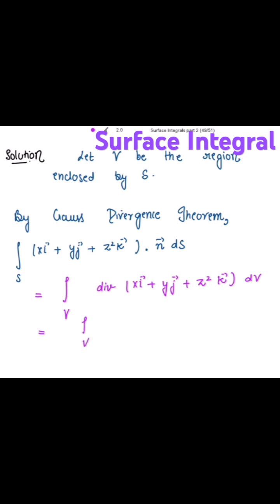the divergence of this vector is the partial derivative of first component with respect to x, right, plus the partial derivative of second component with respect to y, plus the partial derivative of third component with respect to z.